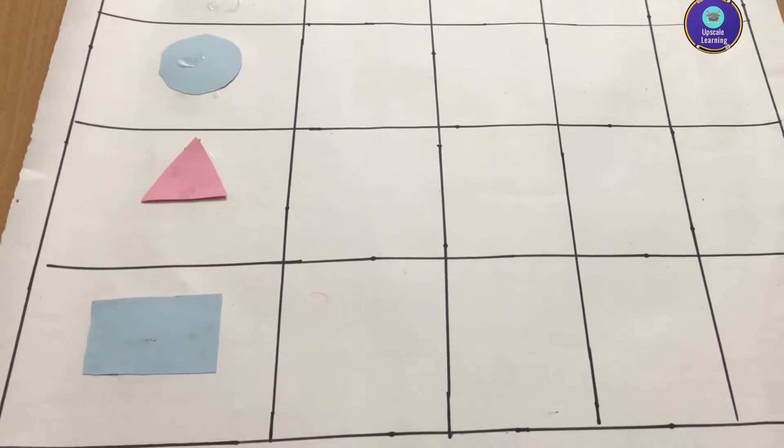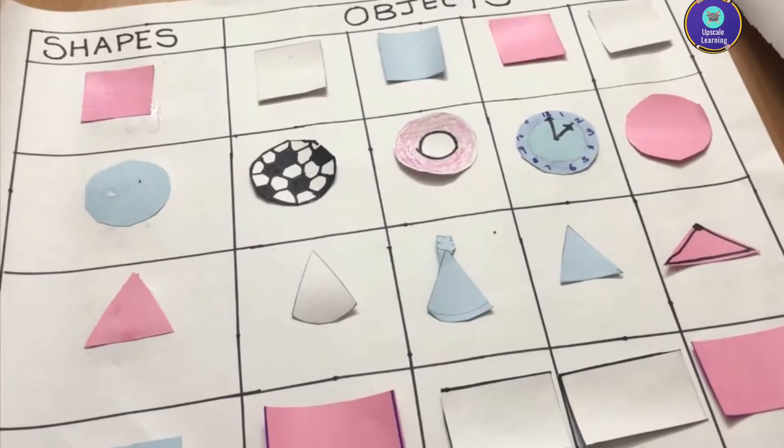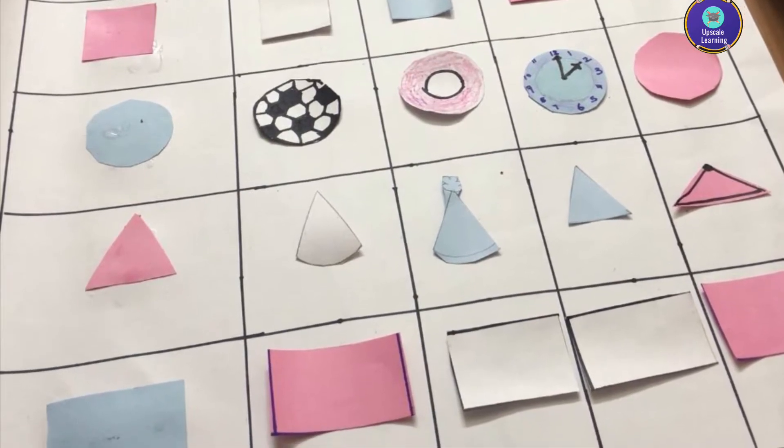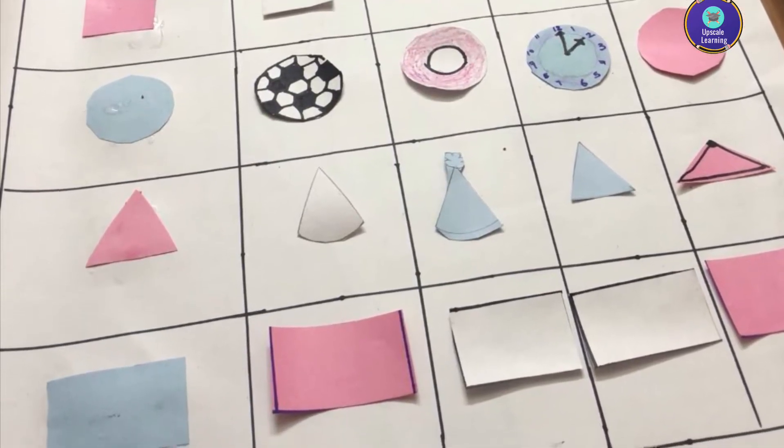In the similar way we are going to take all different shapes and then draw them into different objects. Like sticking a circle and making them into a ball. In the similar way we are going to do for all the shapes.